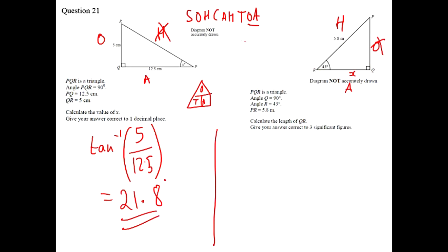So it's A and H in which case we're dealing with cos. So let's draw the cos triangle. So we've got C, A and H. And we're trying to find A. So if we cover up A here we're left with cos times H.